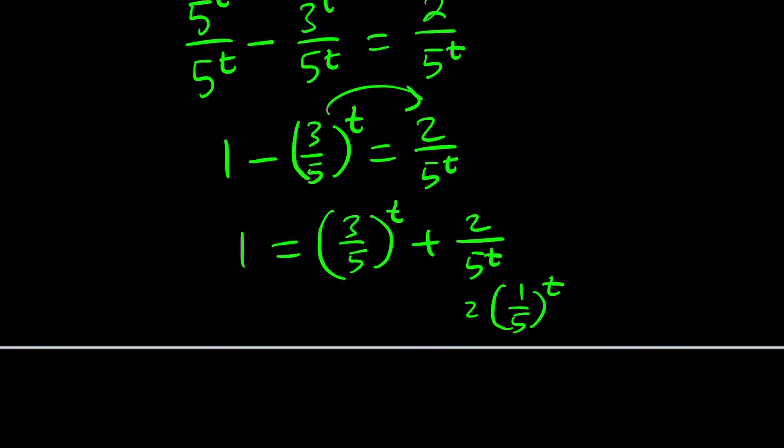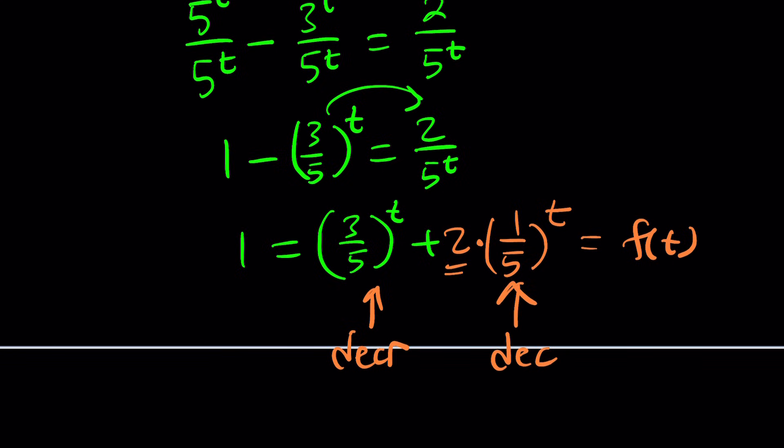Notice that 1/5 is the base here. The bases are between 0 and 1. When that happens, as t increases, the number is going to get smaller and smaller because the denominator grows faster. You're comparing powers of 3 to powers of 5. So this is a decreasing function, and this is another decreasing function. Two decreasing functions added together will make a decreasing function.